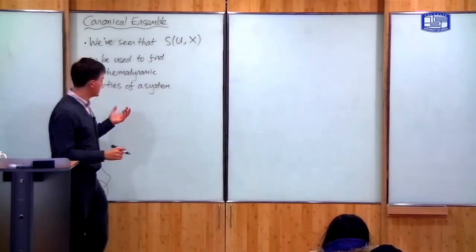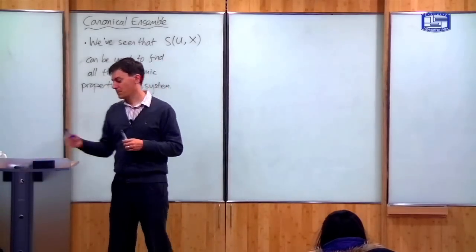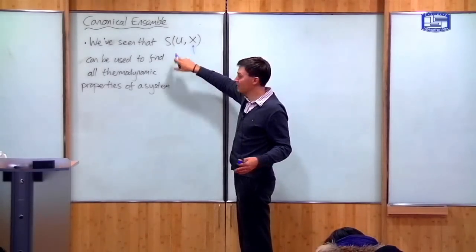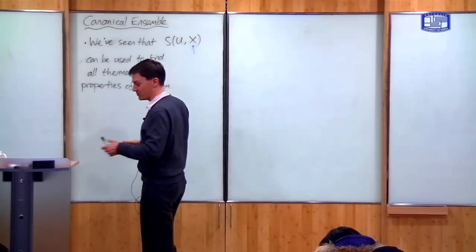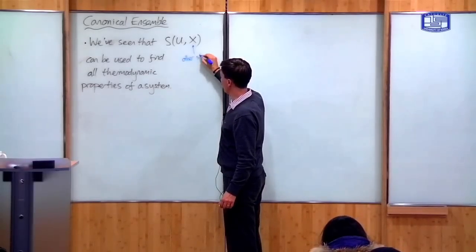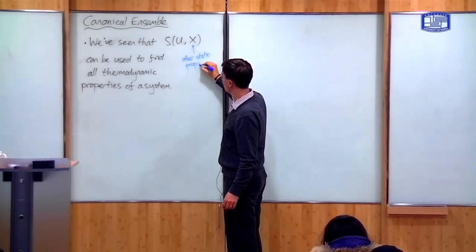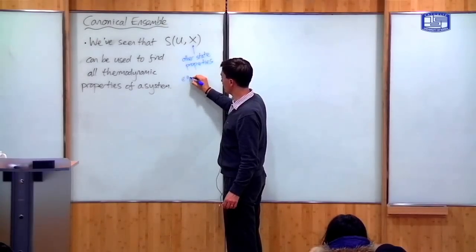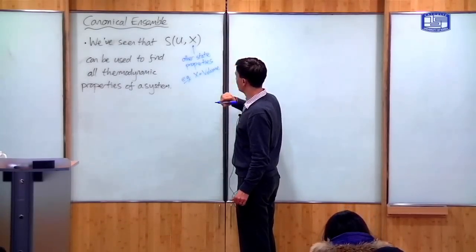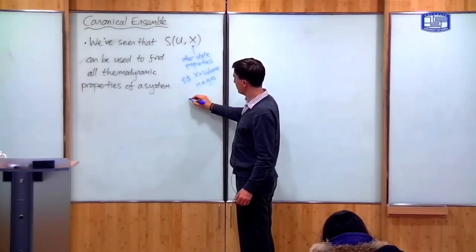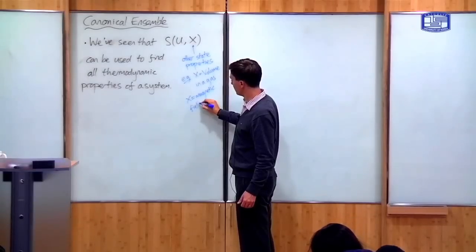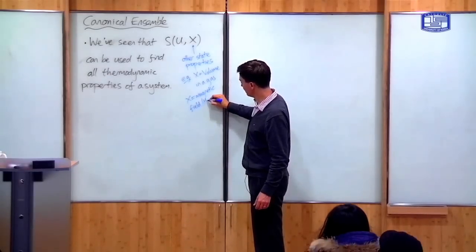In particular, we looked at the case of a paramagnet. The entropy depends upon the energy, but it can also depend upon other things. For example, in a gas it depends upon the volume, and in a paramagnet it depends upon the strength of the external magnetic field. So X represents other state properties — X equals volume for a gas, or X equals magnetic field H for a paramagnet.